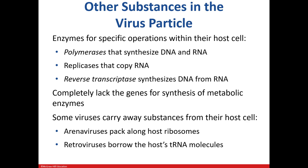Viruses come prepackaged with enzymes like polymerase, which can be used to make DNA or RNA, replicase that can be used to copy RNA, and some retroviruses have reverse transcriptase, which they use to make DNA from RNA. Although they don't have genes for metabolism, they've figured a way around that and use the host cell's metabolic enzymes. Sometimes, they even take things away from the host, like ribosomes and tRNA.